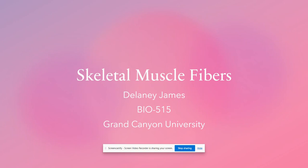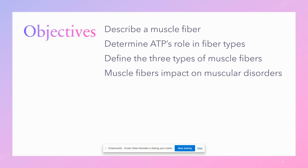Hello, it's Delaney James. This week's presentation I chose to do on skeletal muscle fibers. I do want to preface that I'm feeling a little under the weather, so I apologize if I'm sniffling or coughing. We will be looking at what a muscle fiber is, what ATP's role is in a muscle fiber, and differentiating between the three main types of skeletal muscle fibers: slow oxidative, fast oxidative, and fast glycolytic.